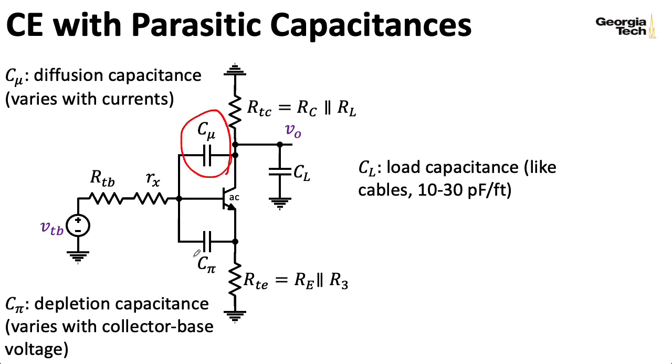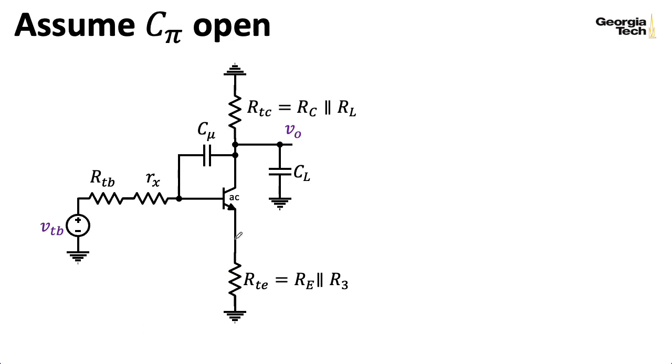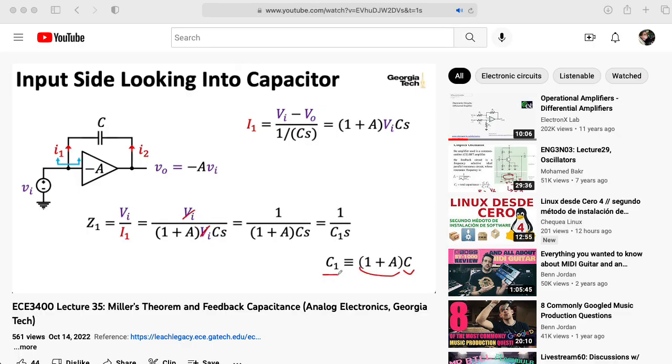All right, so let's focus on C mu, and I'm going to open up C pi. And then what I'm about to do, it's just as easy to leave CL in the schematic, so I'm going to leave it in the schematic. Anyway, if we get rid of C pi, we're left with something like this. Now, we have this BJT in a common emitter configuration, so it's acting as an inverting amplifier. And here we have a capacitance placed between the output and input of that amplifier. So that should immediately make you think about Miller's theorem, which we discussed in the previous lecture.